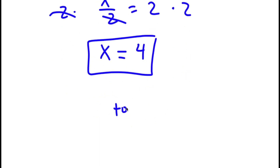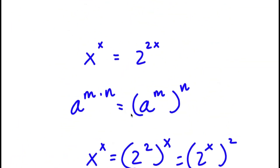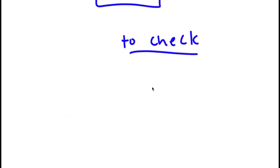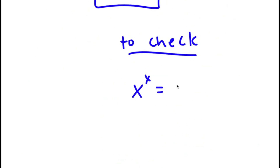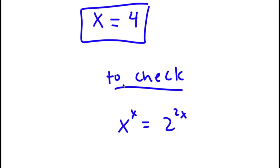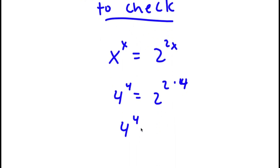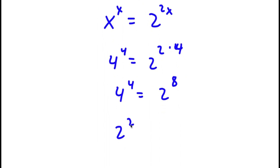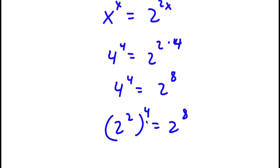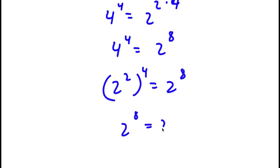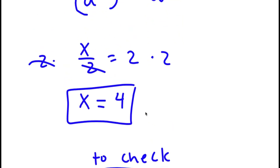Now to check, my original equation was x to the power of x is equal to 2 to the power of 2x. So with x equals 4, I have 4 to the power of 4 is equal to 2 to the power of 2 times 4, which is 2 to the power of 8. Now 4 is the same thing as 2 squared, so I have 2 squared to the power of 4, which equals 2 to the power of 8. So 2 to the power of 8 equals 2 to the power of 8 — the solution is correct.